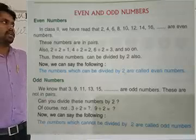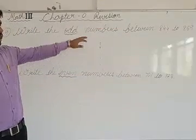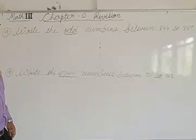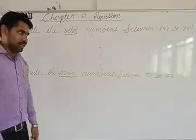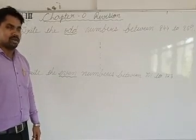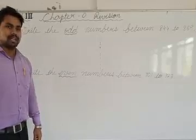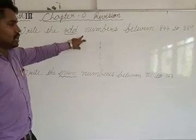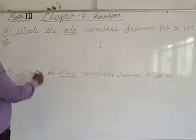Here, you don't need to check by dividing. You just have to write the numbers from this to this. Between 844 to 869 means you don't need to write those two numbers — after 844 and before 869, write all numbers in between. So, 845 is not divisible by 2, so we write 845.